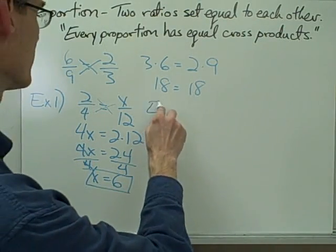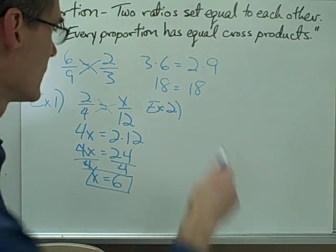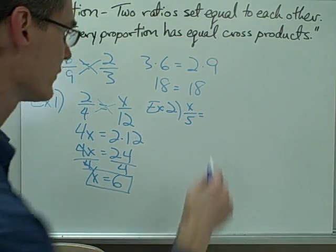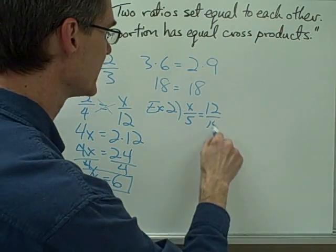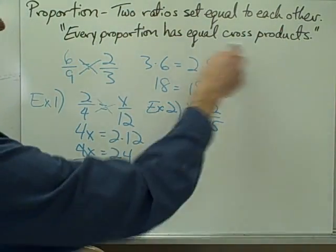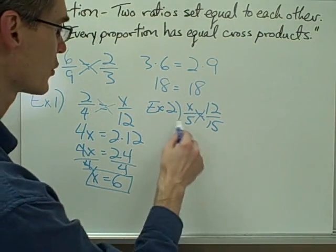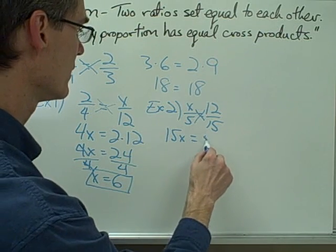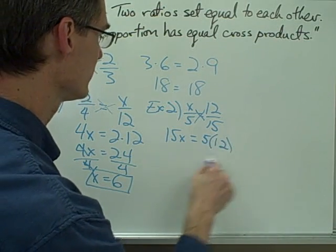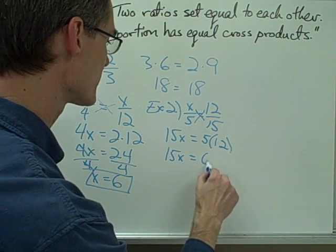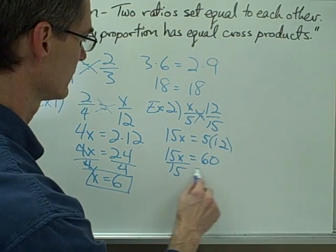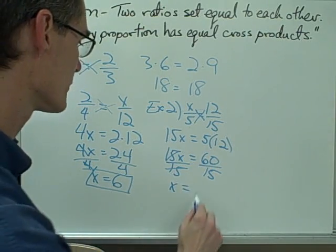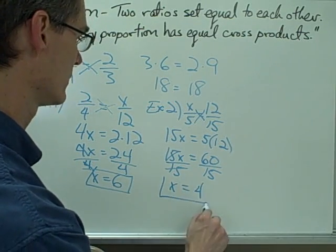Example number two: I have a proportion, x over 5 equals 12 over 15. I'm going to use the equal cross products property and multiply across my equal sign. 15x equals 5 times 12. 15x equals 60. Divide both sides by 15 and I get x equals 4.